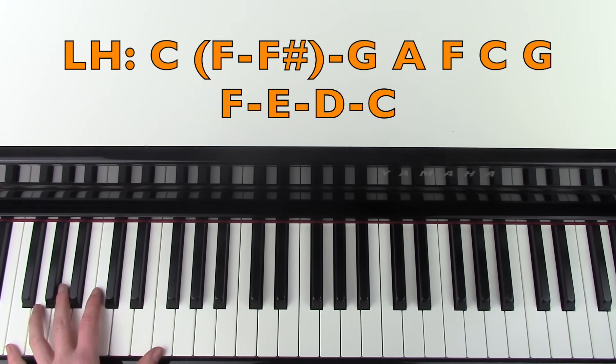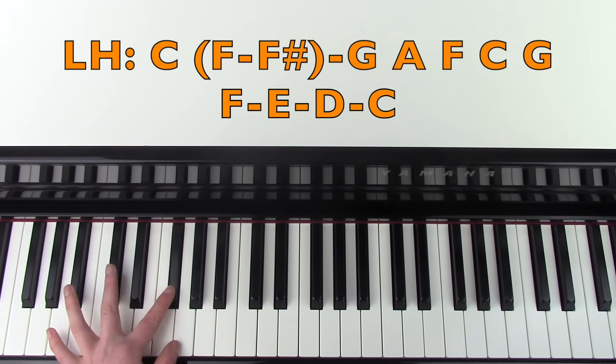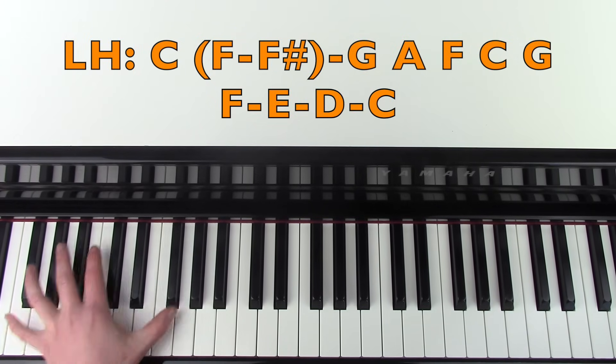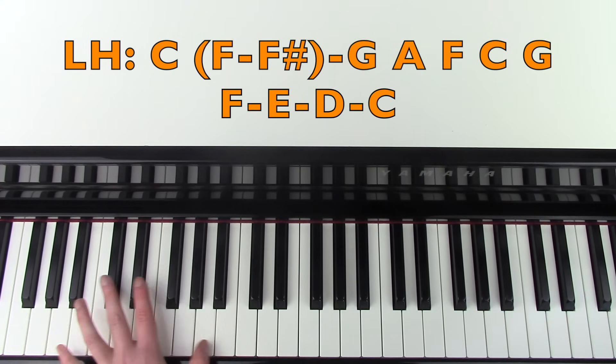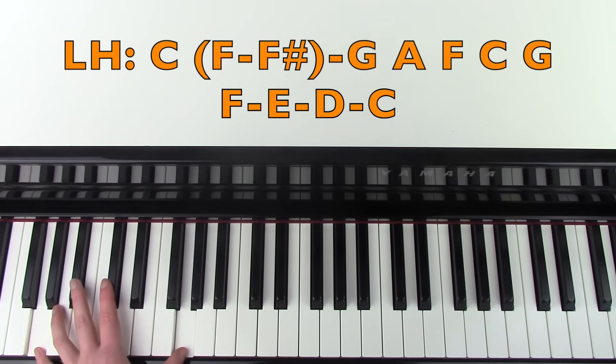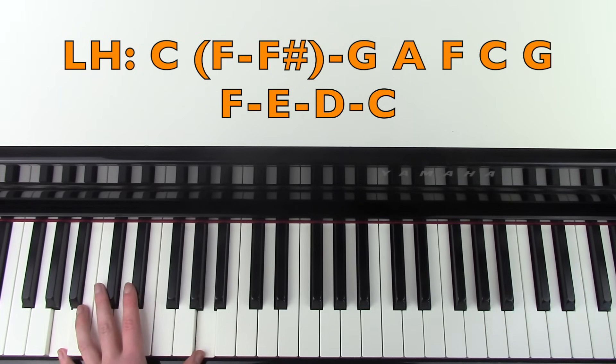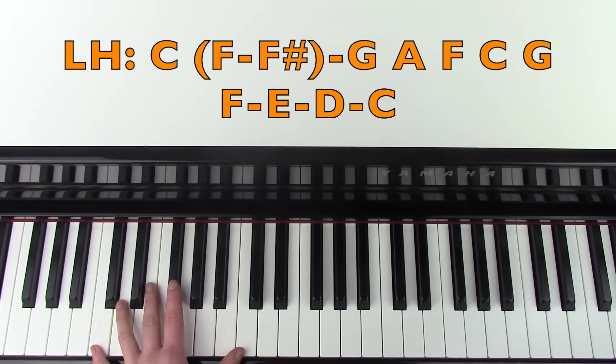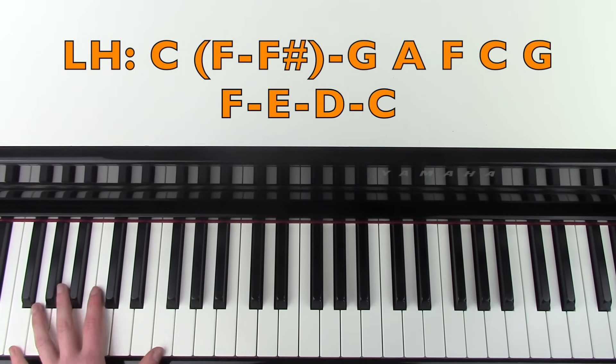Then you could do this walk up, which is F, F sharp, G. But if you don't want to add that quick part in, after you've played the C, just go straight to the G. Then it's to A, then to F, C, walk up.